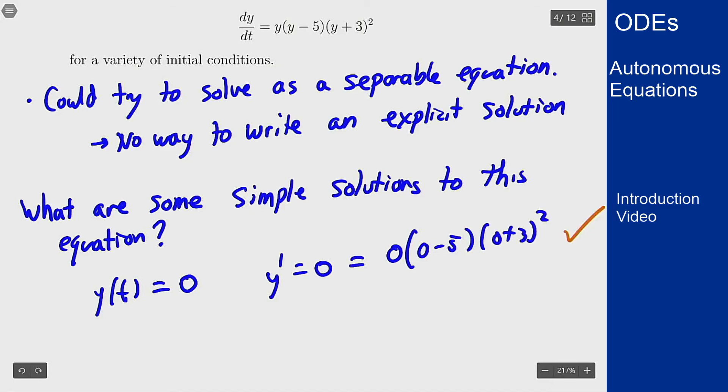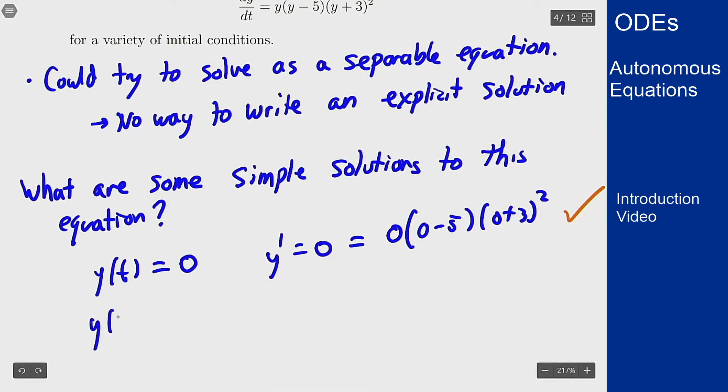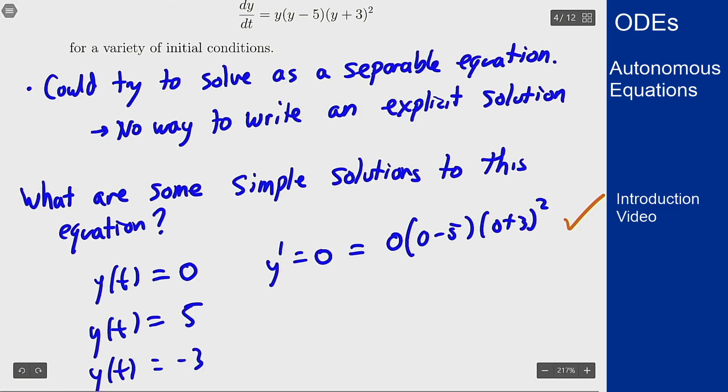Similarly we can find that taking y of t to be identically 5 for all t and y of t to be minus 3 for all t solve the equation for the exact same reason. The derivative is 0 but when I plug that y value into my differential equation I also get 0 on the right hand side.